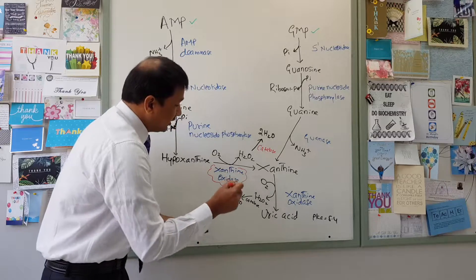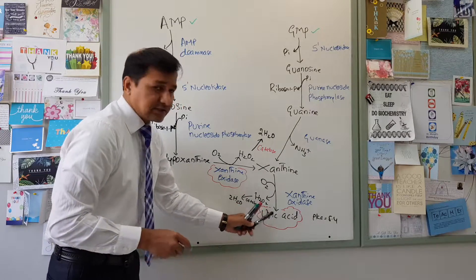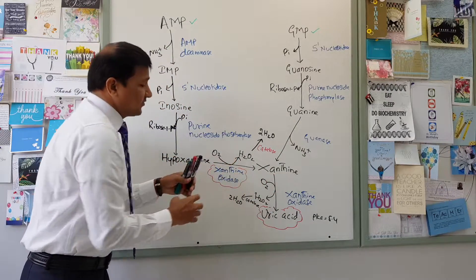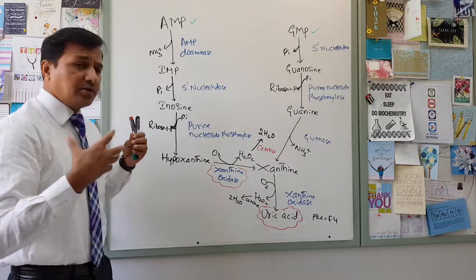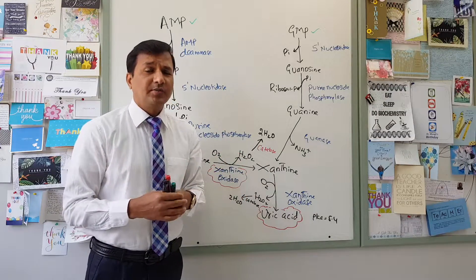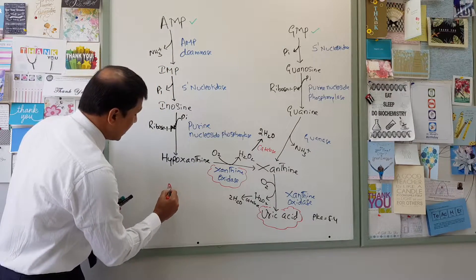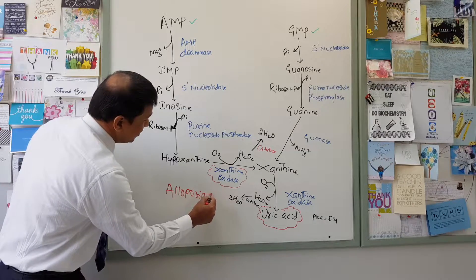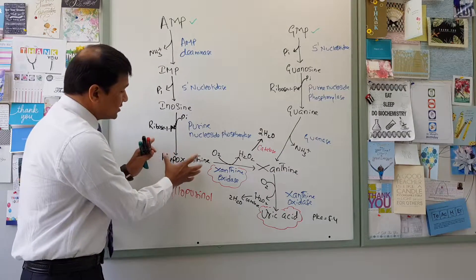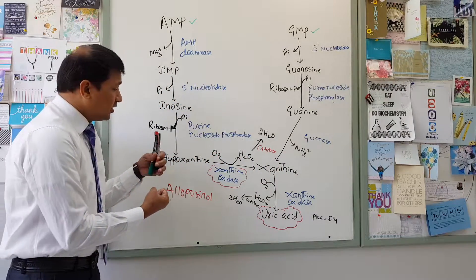That is how uric acid is produced — it is the degradation end product of purine nucleotides. Whenever a person has high uric acid levels, as seen in gout or Lesch-Nyhan syndrome (hyperuricemia), allopurinol is used to decrease uric acid levels. Allopurinol is a structural analog of hypoxanthine or xanthine — essentially a purine base analog — and it competes with xanthine or hypoxanthine for the same enzyme, xanthine oxidase.